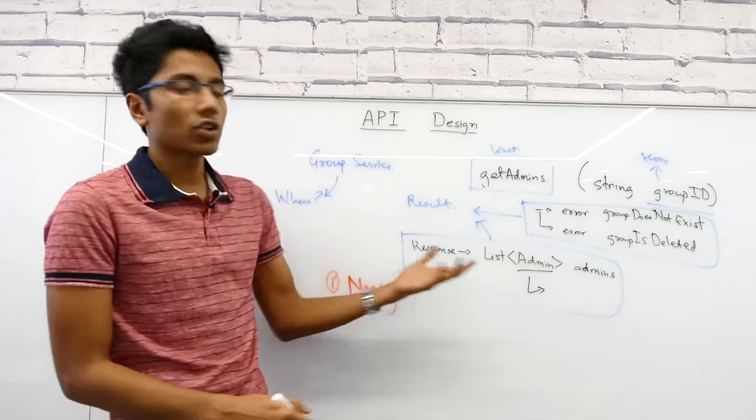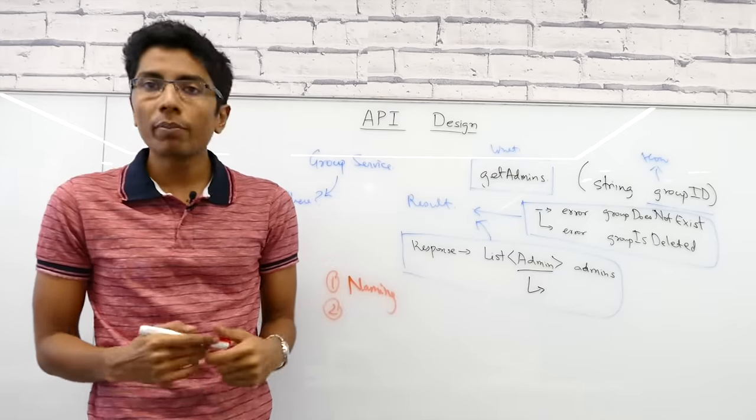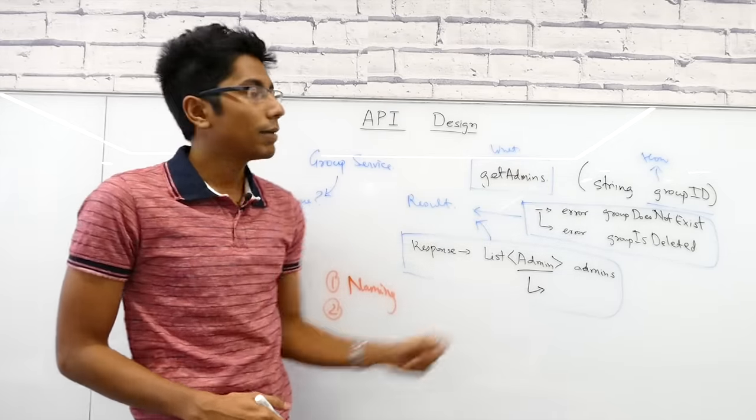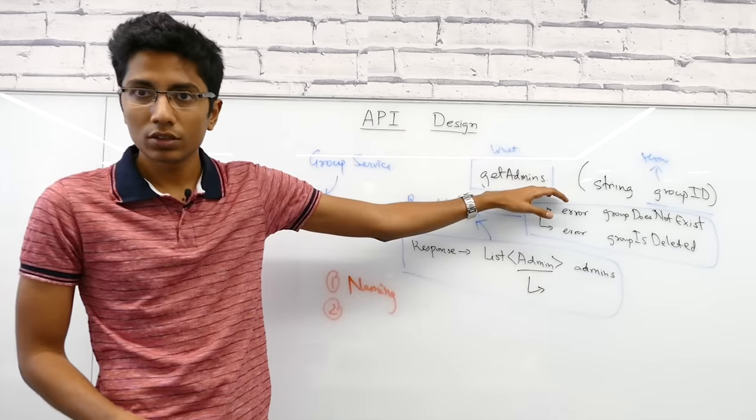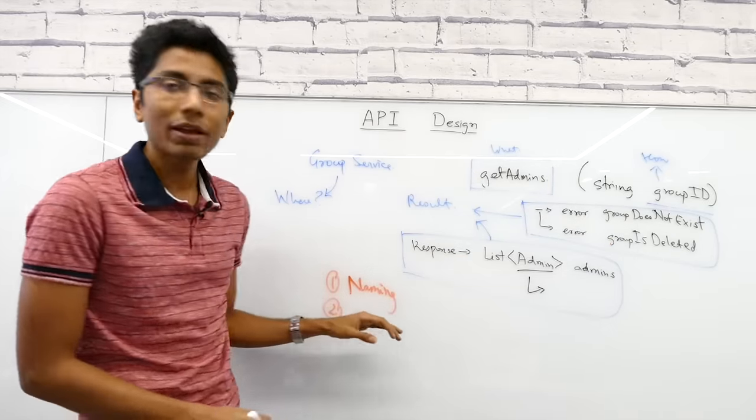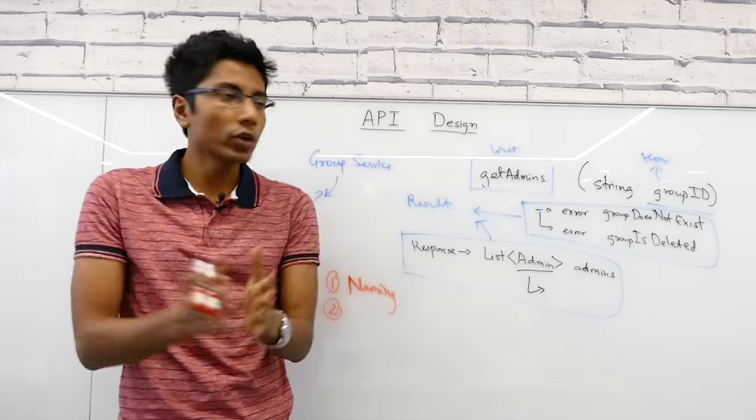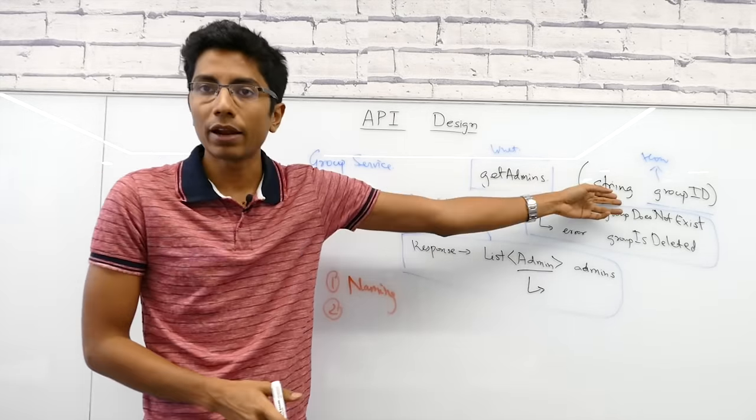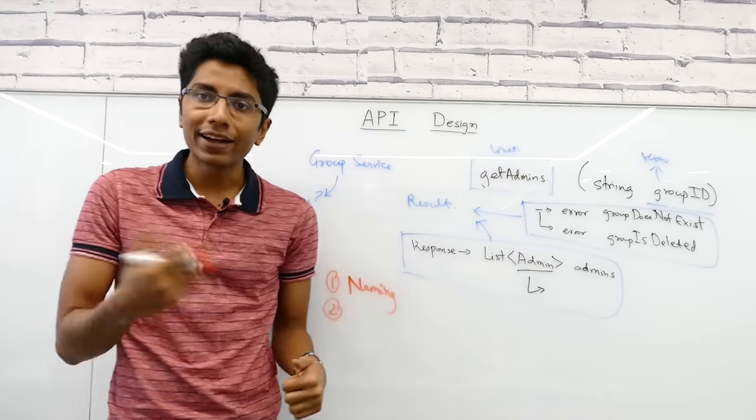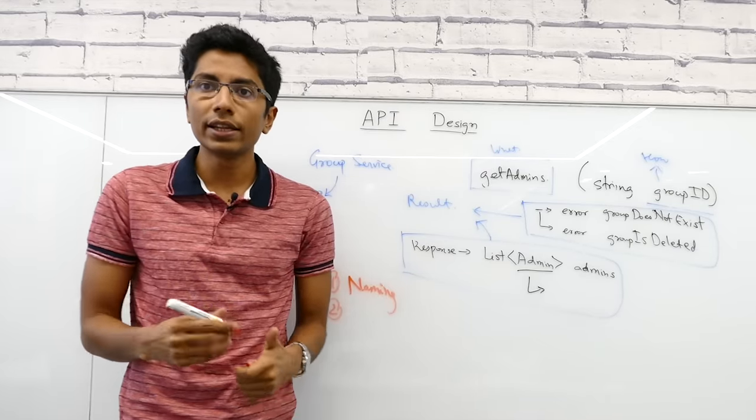The second issue could be that when you're asking for a group ID, maybe the caller has more than that. Maybe they have the list of admins or user IDs they want to check. In these cases, should you also allow an additional parameter of list of users? This depends on the context, but the action that you're doing should define the name and the parameters. Don't take additional parameters unless absolutely necessary.